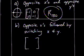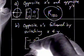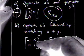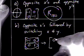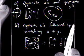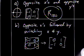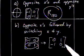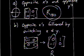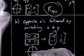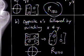For 'opposite x values followed by switching x and y': opposite x values gives us the matrix negative 1, 0, 0, 1. Then switching x and y interchanges the rows: 0, 1 comes to the top and negative 1, 0 goes to the bottom. Multiplying those together gives 0, negative 1, 1, 0. This fits the rotation pattern, and the first column shows (0, negative 1) — which is the rotation 270 matrix.